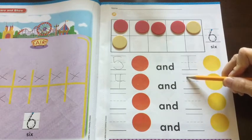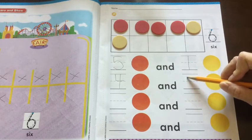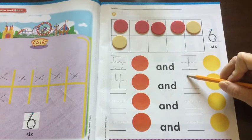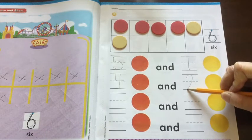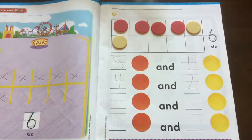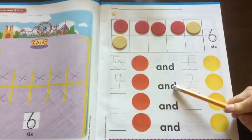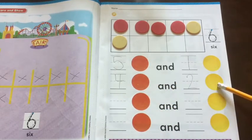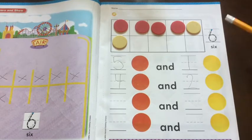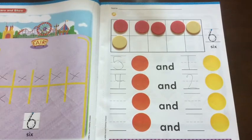I'm going to start right here. Let's make our 2. Around and back on a railroad track. 2, 2. So let's read what we have now. 4, red, and 2, yellow. What does that make? 6 altogether. They're just different colors, but it's still 6.